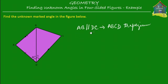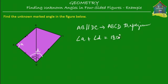Now if AB is parallel to DC, then we know that this angle — which is angle A — and this angle which is angle ADC, let's call it angle D, since these two sides AB and DC are parallel to each other, the sum of the angles between them, which is angle A and angle D, is equal to 180 degrees. So angle DAB plus angle ADC — in the trapezium the sum of these two angles is equal to 180 degrees.